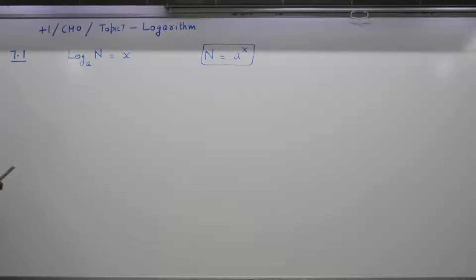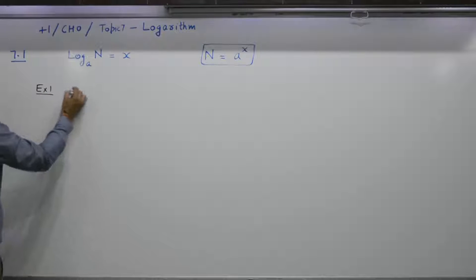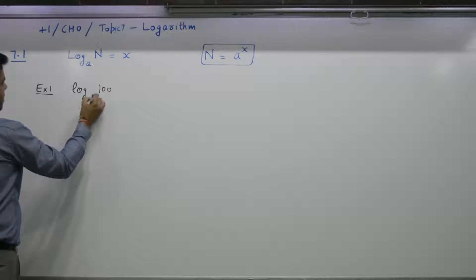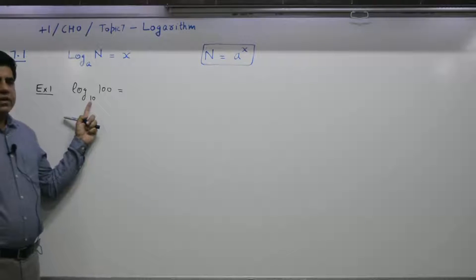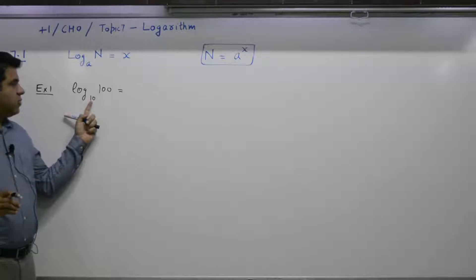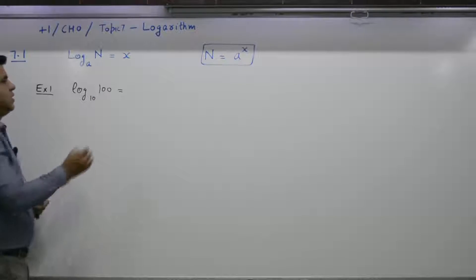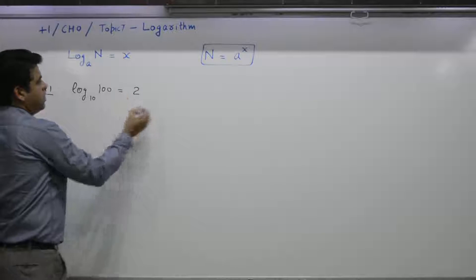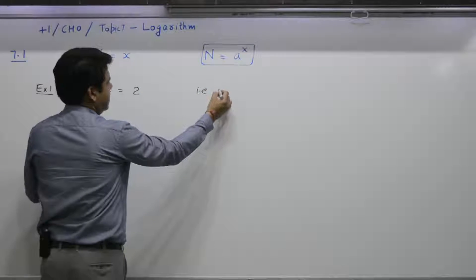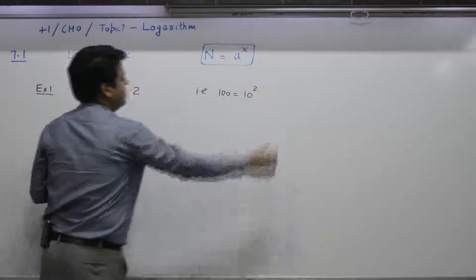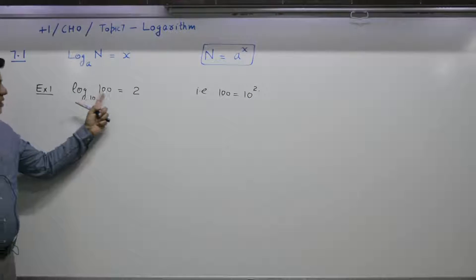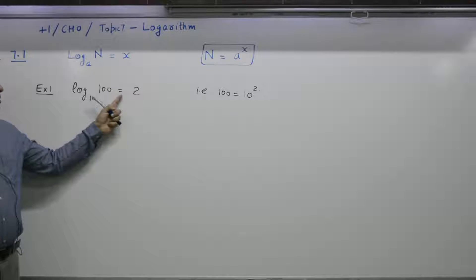Let us take up some examples. Log of 100 to the base 10. What power of 10 gives you 100? 10 to the power 1 is 10, 10 to the power 2 is 100. So what power of 10 gives you 100? The answer is 2. That is, 100 is equal to 10 to the power 2. So log of 100 to the base 10 is equal to 2.